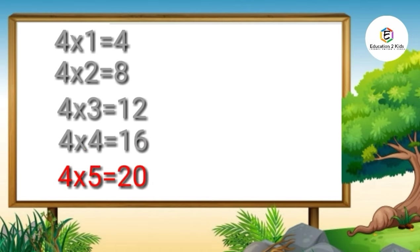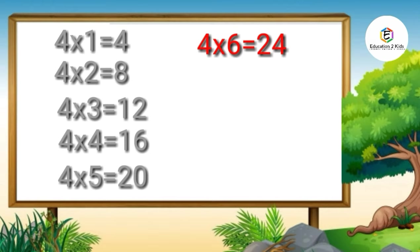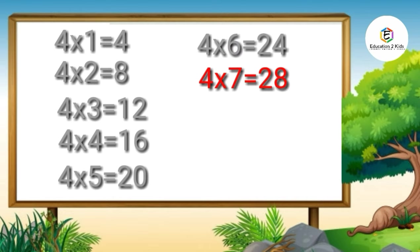Four fives are twenty. Four sixes are twenty-four. Four sevens are twenty-eight.